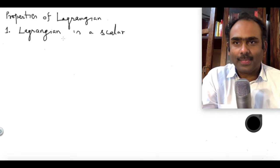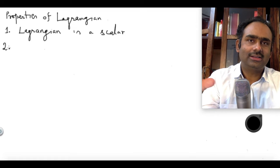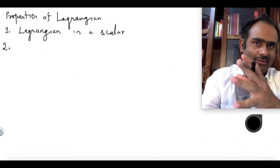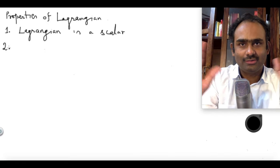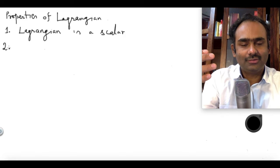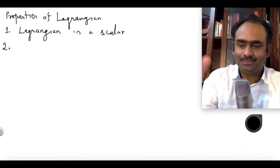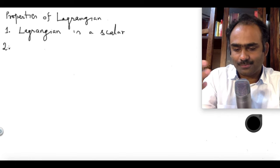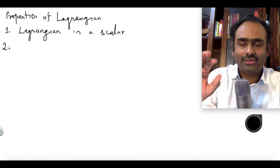Also, let us say you are looking at a system which has several particles but you can group the particles into two parts. The particles belonging to part A do not interact with the particles belonging to part B. So I am imagining a system with two parts, A and B. The particles within A interact among themselves, particles within B interact among themselves, but particles from one group do not interact with particles from the other group. What I want to show is that in such a case, the Lagrangian of the entire system can be written as a sum of Lagrangians of the individual parts.